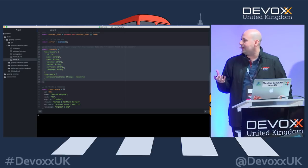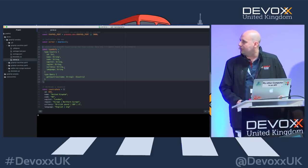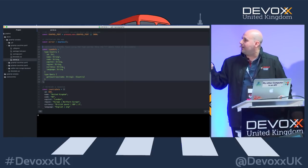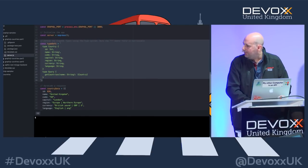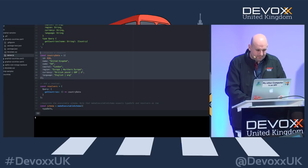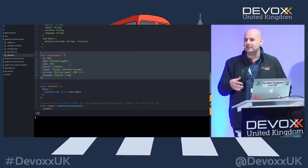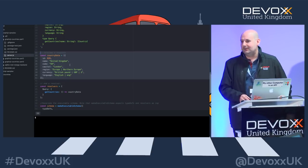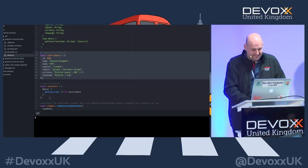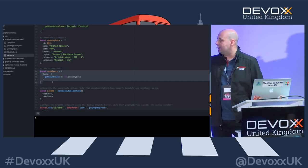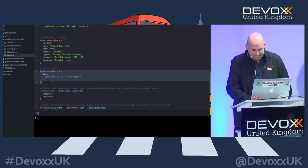I'm defining types — this is very important. If you don't have types, you simply don't have GraphQL. I'm defining a country type with some fields, and I'm defining a query that takes a string argument and returns a collection of countries. Then I'm hard-coding some data in this example — I'm not calling anything in the backend yet, but we will in a second. We're going to call a famous REST endpoint called REST Countries, and you'll see the difference on how easy it is in GraphQL compared to doing it directly.